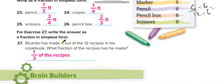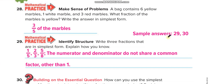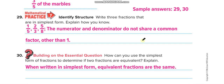Ricardo has made 4 out of the 12 recipes in his cookbook. What fraction of the recipes has he made? 4 over 12, divide by 4 up and down, gives 1 over 3. I hope you understand the lesson. Don't forget to like this video and subscribe to my channel Learn Math with Mr. Saad, and press the bell icon to get notified for every new video. Thank you so much, have a nice day!